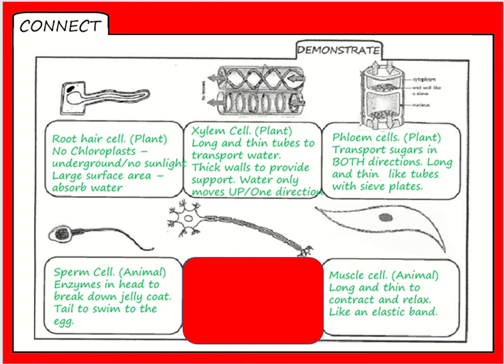We're also going to look at specialised cells. If you remember, you did specialised cells in B1 and you would have completed a sheet like this. There are specific cells that you need to know how they are adapted to their function. You've got a root hair cell - it doesn't have any chloroplasts because it's underground and there's no sunlight, and it has a large surface area to absorb more water. Then we've got xylem cells - these are plant cells, they are long and thin tubes, they transport water in one direction, and they have thick walls to provide support. Phloem cells, also in a plant, transport sugars and this moves in both directions. They're also long and thin like tubes and they have sieve plates at the end of them.